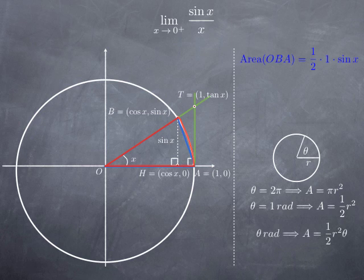Therefore, if the angular measure is theta radians, the area of the angular sector is one half r² times theta. Here r equals 1 because we are on the unit circle, and the measure of the sector is x radians, so we obtain one half times x.